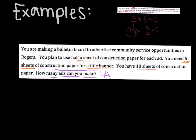Step number three — read and circle your operations and put a sign with them. You plan to use half a sheet of construction paper for each ad. I would consider 'half' also an operation. You can think of it as multiplying by one-half or dividing by two — either way, it depends on how you see it. You need five sheets of construction paper for a title banner. You have 18 sheets of construction paper. That's the only operation we have there.